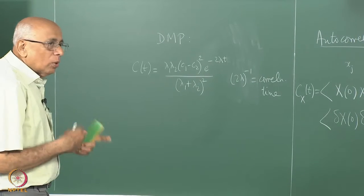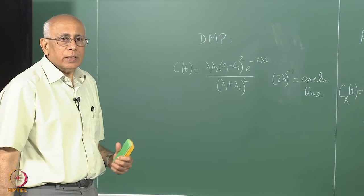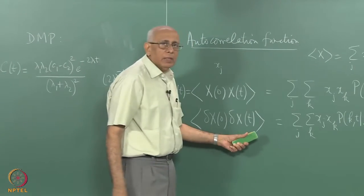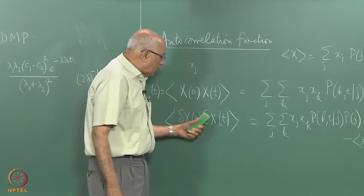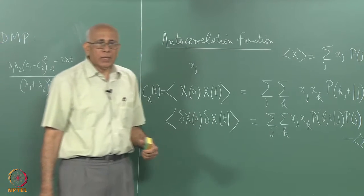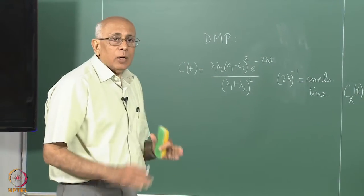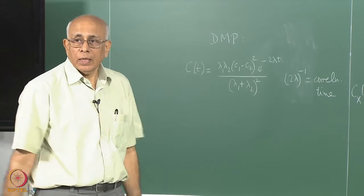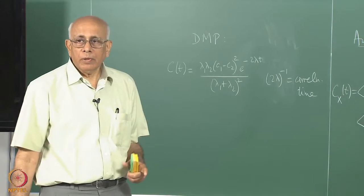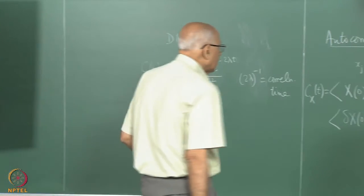Once things get more complicated, evaluating the correlation time becomes non-trivial. Eventually we will talk not about the autocorrelation function itself but its Fourier transform — decomposing it into Fourier components and asking how much amplitude is in a given frequency window. That leads to the concept of the power spectral density of a random process, which we'll come back to.